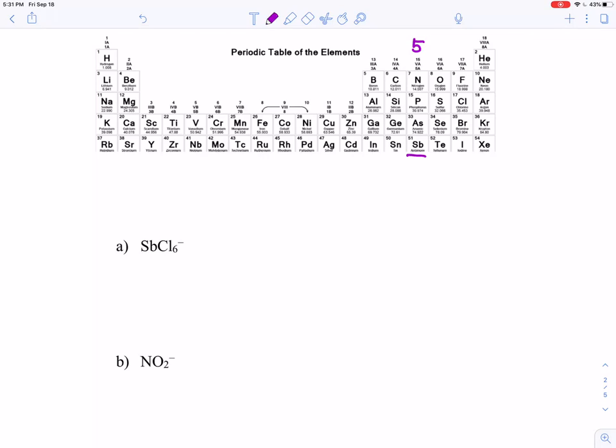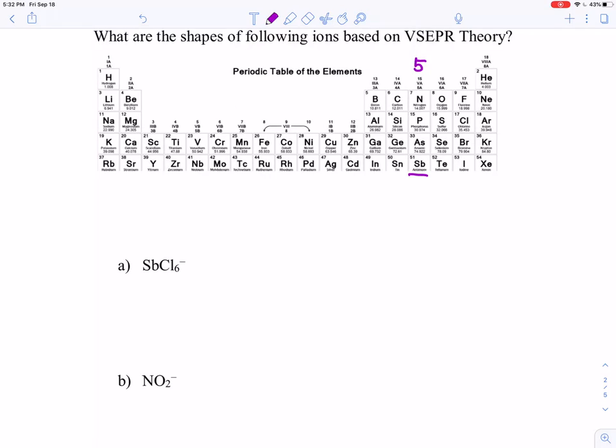So first of all, you need to figure out the Lewis structure. So antimony means 5 electrons, and then chlorine, which is located right here, which means 7. And then you have a negative charge, so 1 electron is there. So there are 6 of them. So therefore, what that means is you have 5 electrons in the valence shell, and you have 7 times 6, which is 42 electrons, and you have 1 electron extra. So you add them together, and you've got 48 electrons.